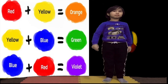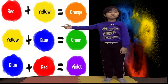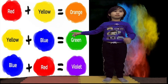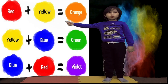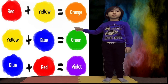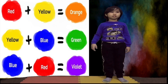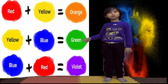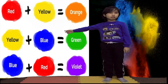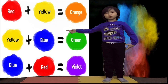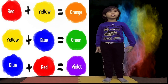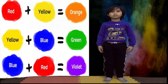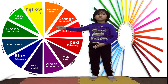Mixing primary colors gives you a secondary color. For example, when you mix red and yellow, it gives you orange. When you mix yellow and blue, it gives you green. When you mix blue and red, it gives you violet — a secondary color.